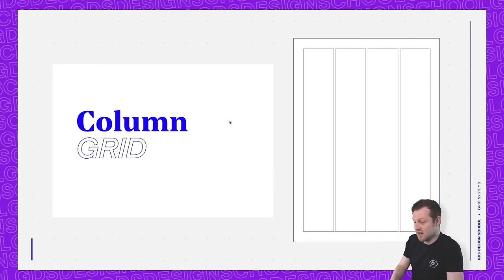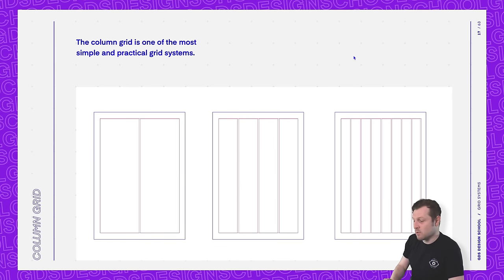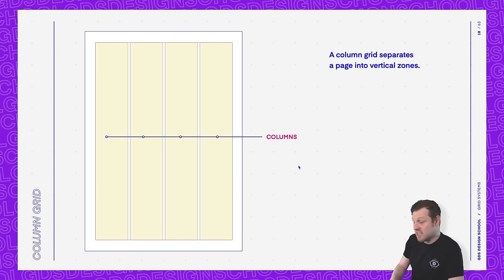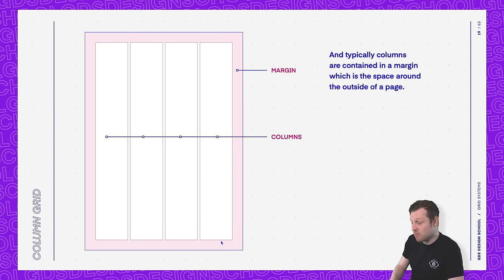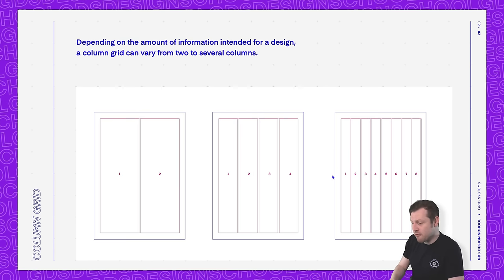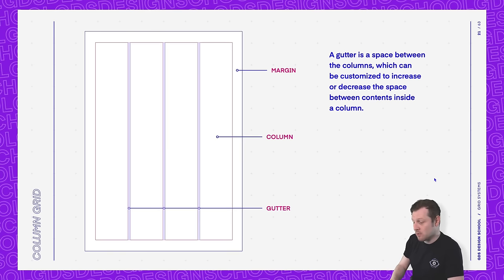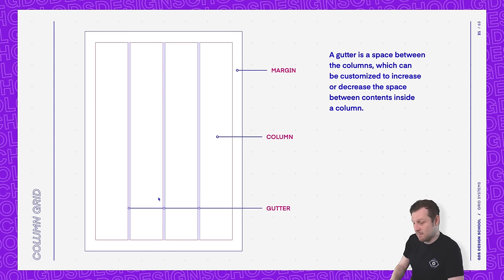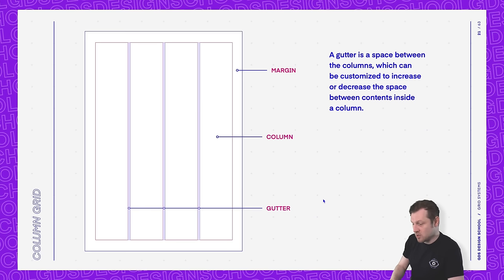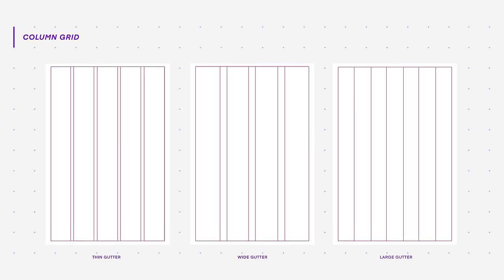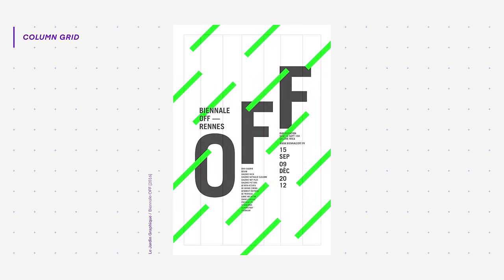One of the most common grids to use in design is the column grid. The column grid is one of the most simple and practical grid systems. A column grid separates a page into vertical zones, and typically columns are contained in a margin, which is the space around the outside of a page. Depending on the amount of information intended for a design, a column grid can vary from two to several columns.